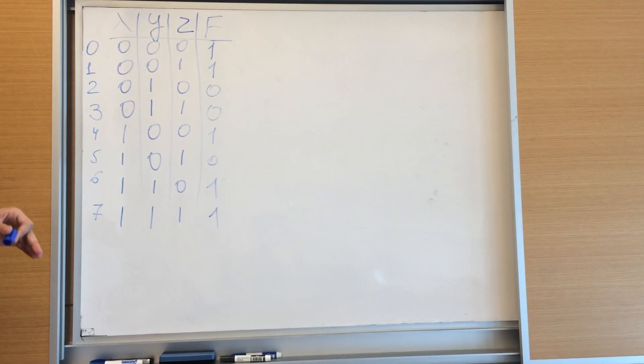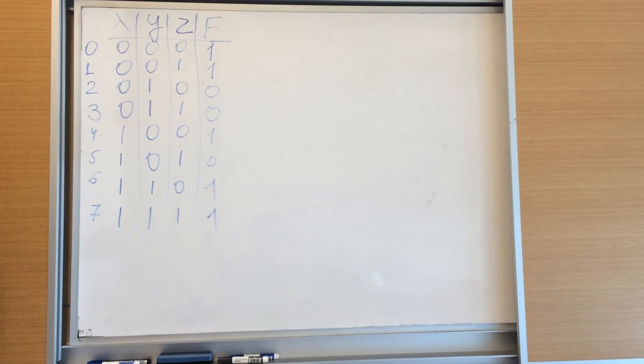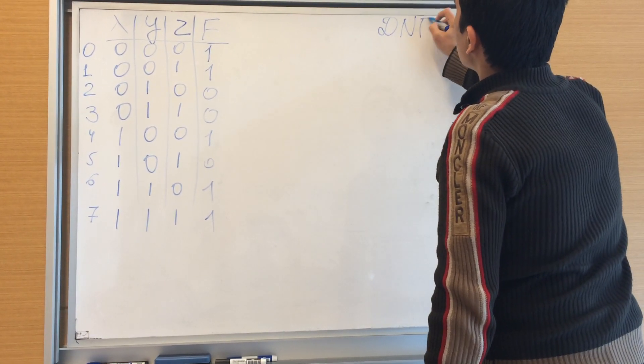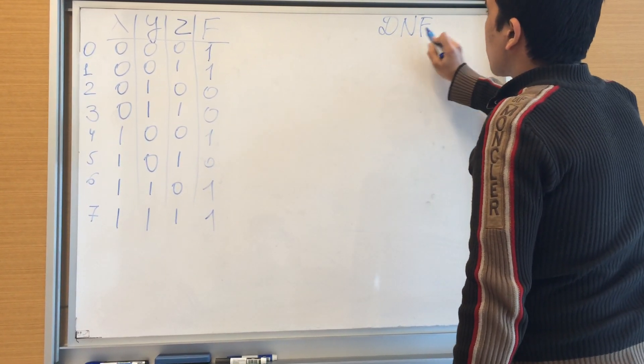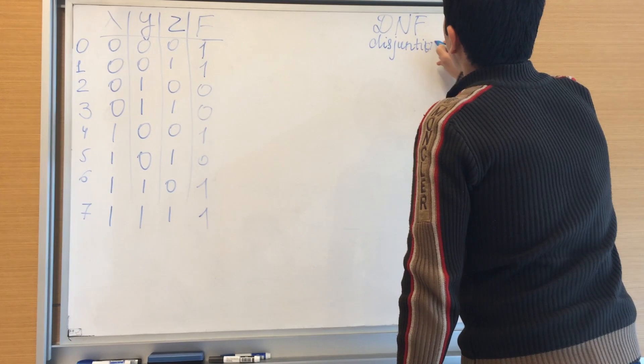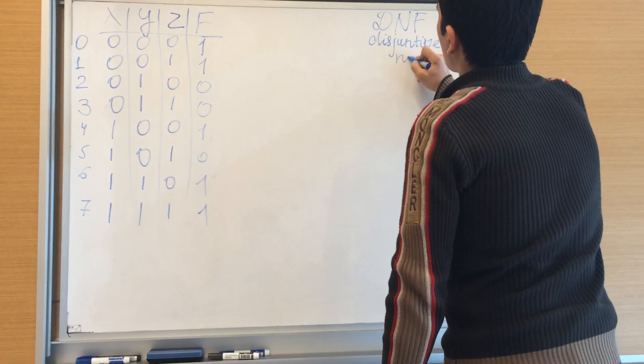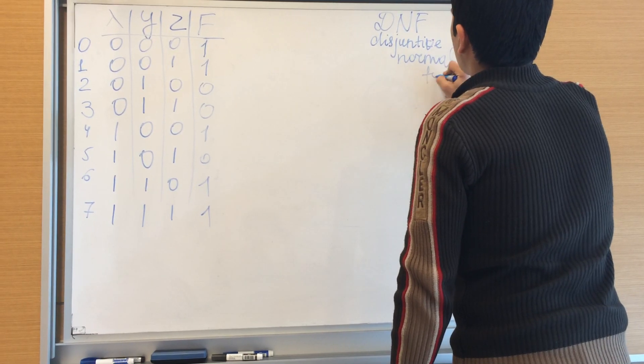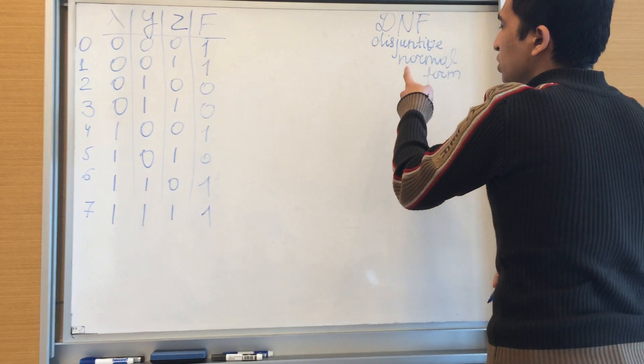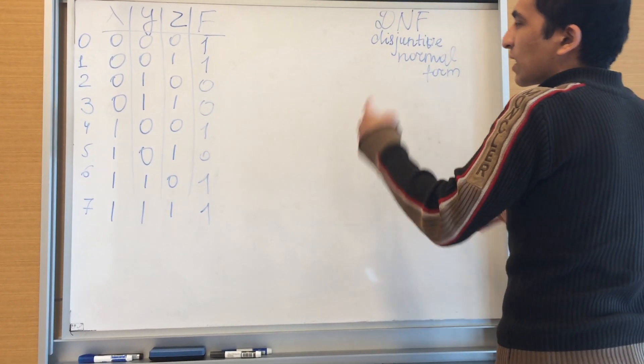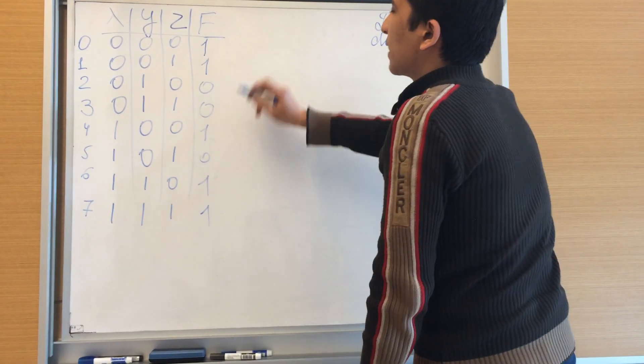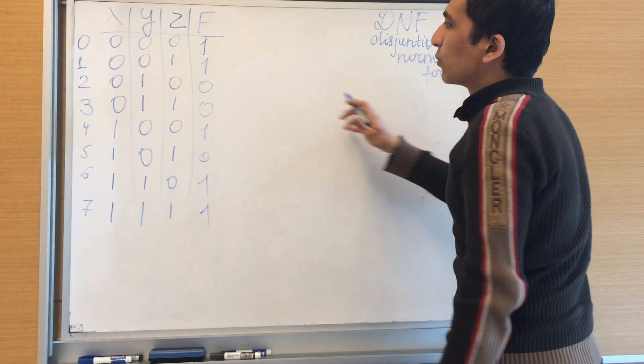Let's see how we can do it. DNF means disjunctive normal form, and for building disjunctive we have to make some disjunctions of some expressions.